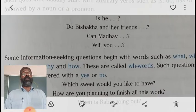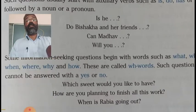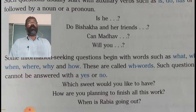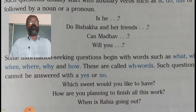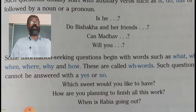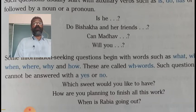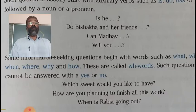We also ask questions for getting information. Information-seeking questions begin with question words like what, which, when, where, why, and how. All these question words have the common letters W and H, so these information-seeking questions beginning with question words are generally known as WH questions. WH questions cannot be answered in yes or no; instead we should give the information sought through these questions.